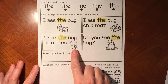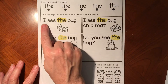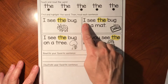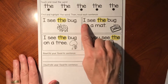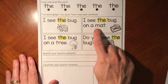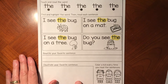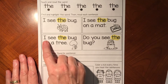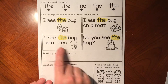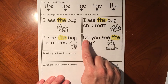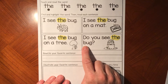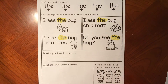Remember you can use the pictures to help you figure out what would make sense. I see the bug. Oh, it's the same thing, and then it continues. I see the bug. Where is it? On a tree. They're asking a question — there's a question mark right there. This word is 'do' and this word is 'you.' Do you see the bug? Do you see it? It's in the jar, I think.